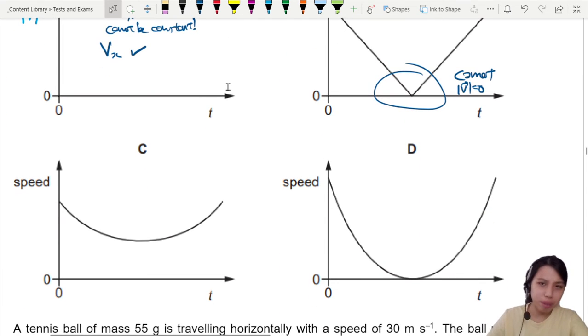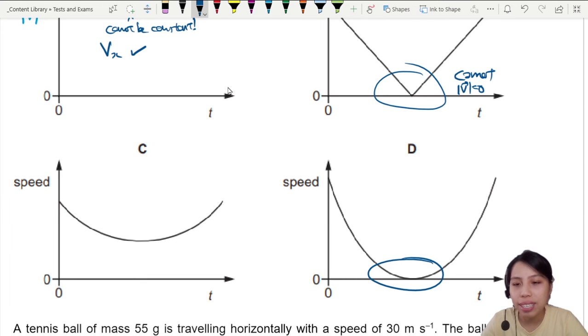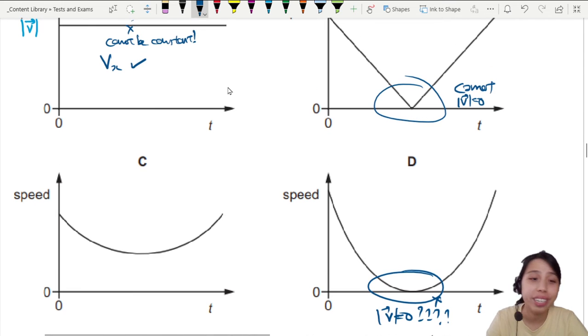That means also D is something wrong already. Looks very nice, but what is this? No zero speed. Your projectile does not stop moving. It's always moving. It's just the components are changing. So that leaves us with the last choice which is C.